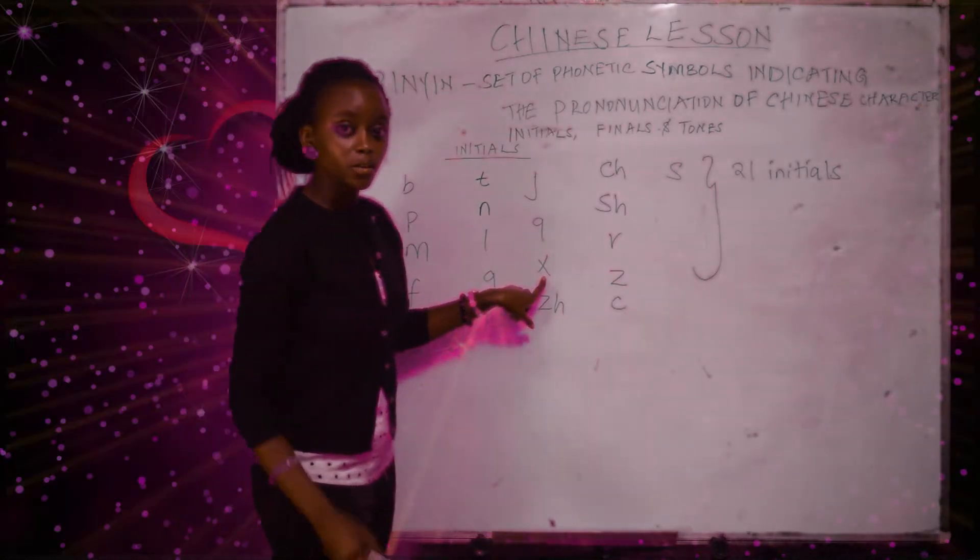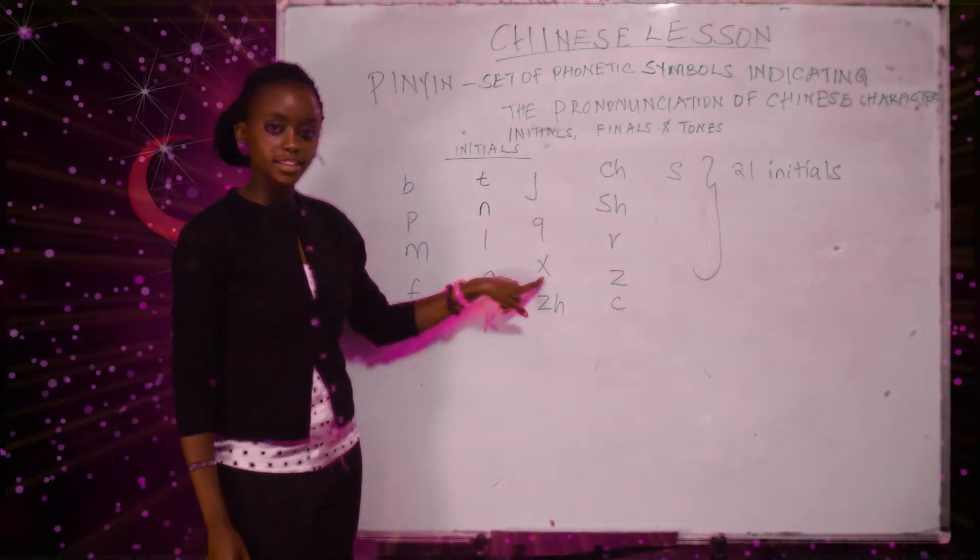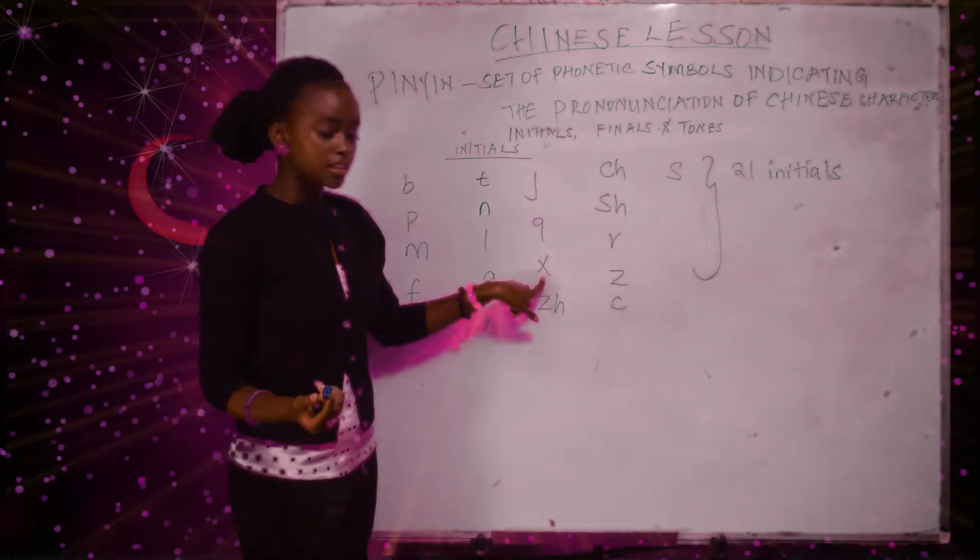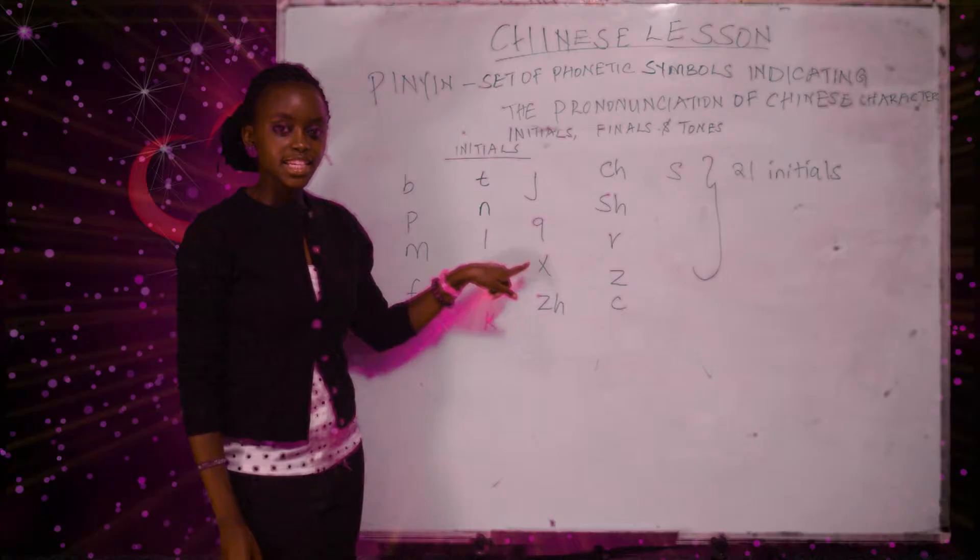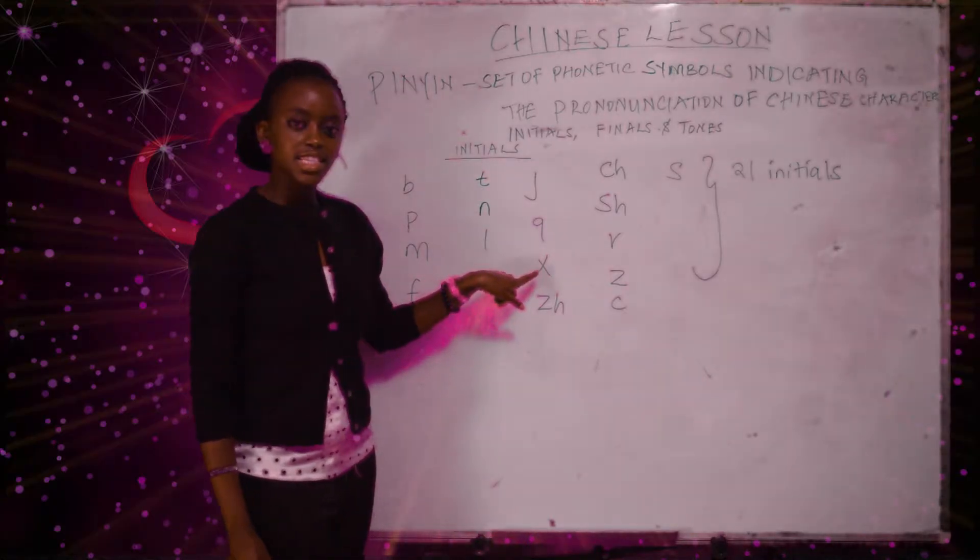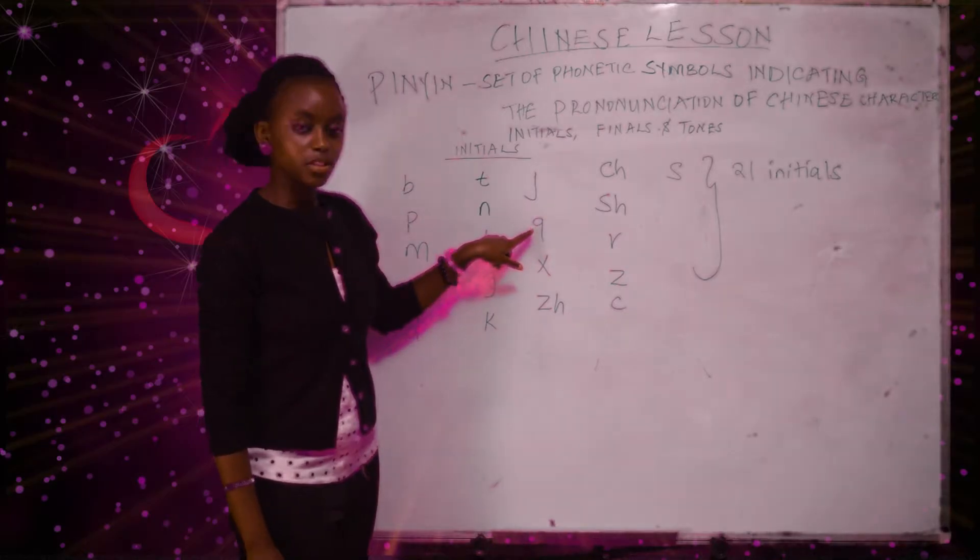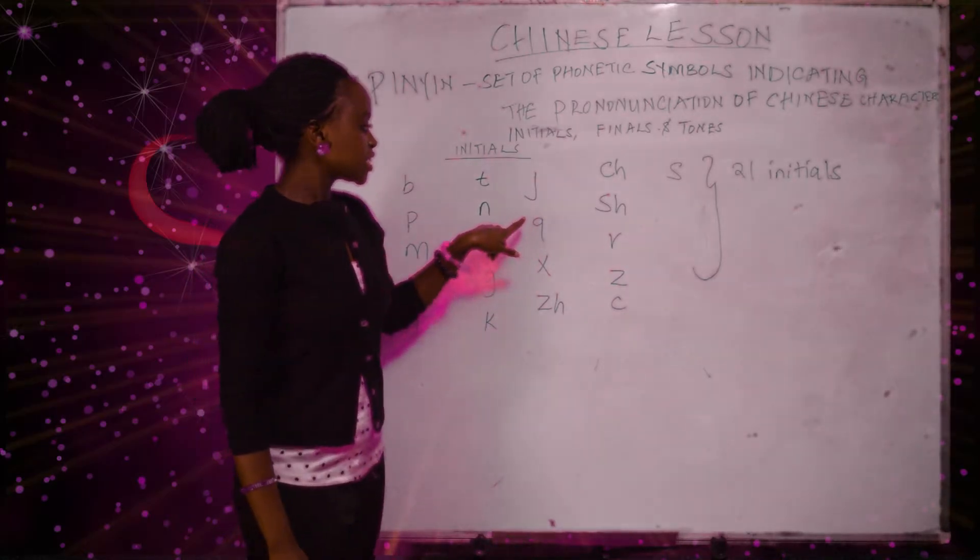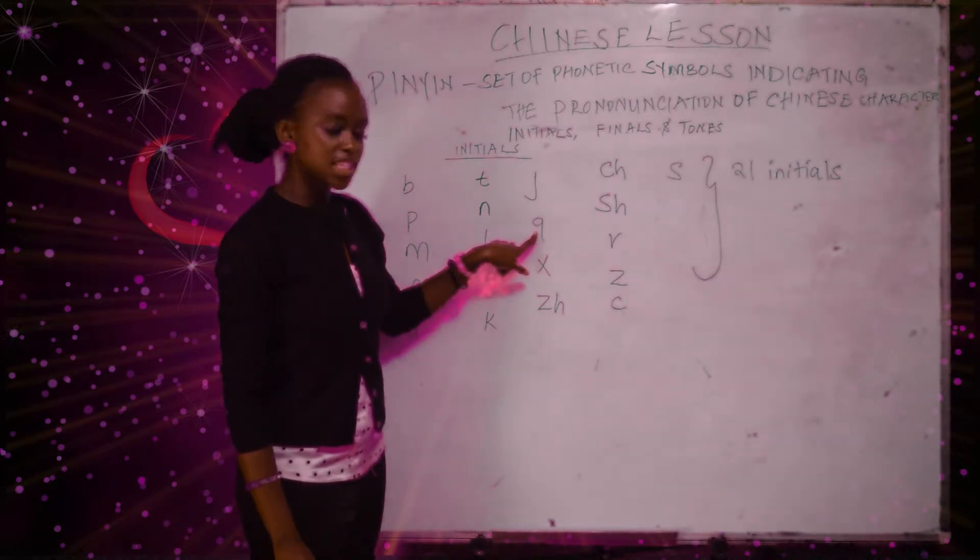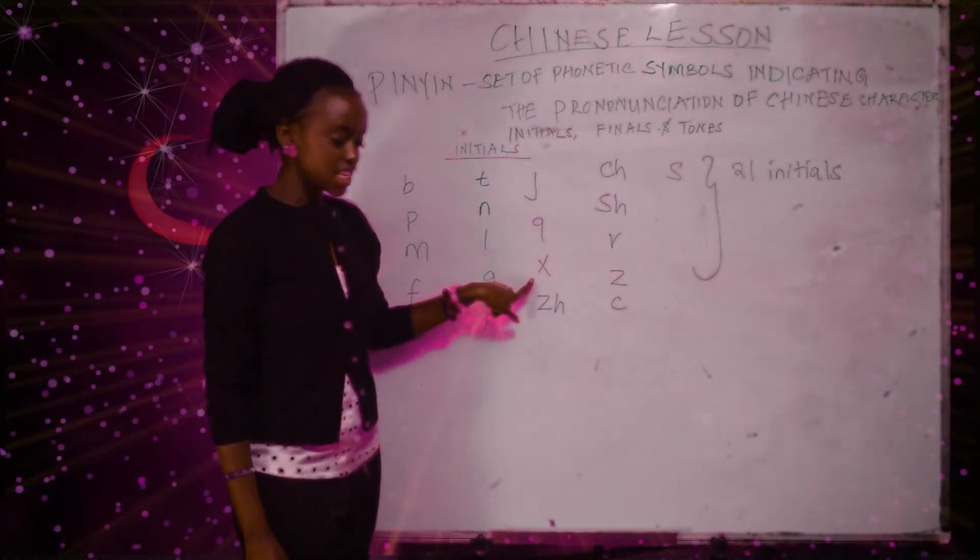The X also, many people find a lot of difficulty when you come to pronounce the X. So the X is shii, shii. Also, don't confuse the Q and the X. Remember the Q is chii, chii, and the X is shii, shii.